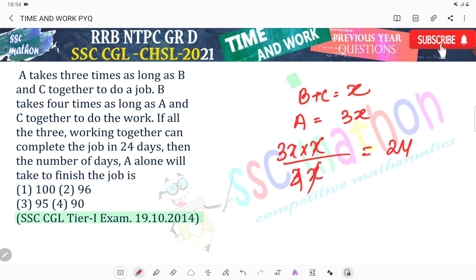A takes 3 times as long as B and C together to do a job. If we take B and C to do the job per day, then A will take 3 times as long.